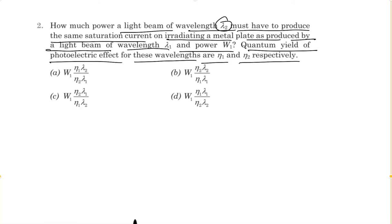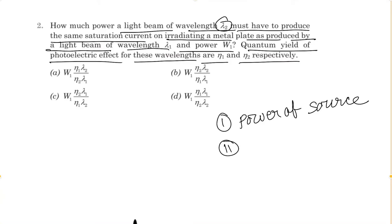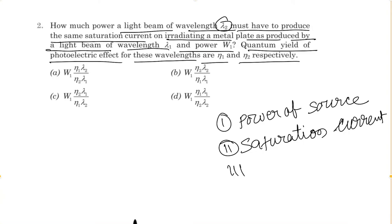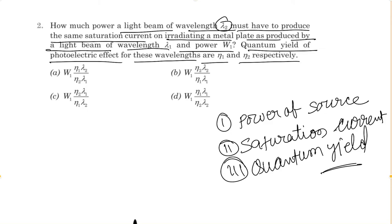This problem is based on three important concepts. The first concept is the power of the source and how the power of the source is related to the number of photons. The second concept is saturation current. The third concept involved in this question is quantum yield.